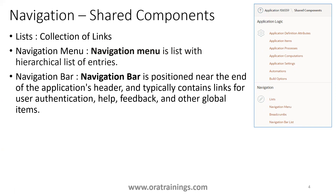A list is a collection of links — a link being an address or URL. The navigation menu is a list with a hierarchical set of entries. The navigation bar is generally positioned near the end of the application header, and it typically contains links for feedback, help, sign out, sign in, administration pages, or a global set of items.